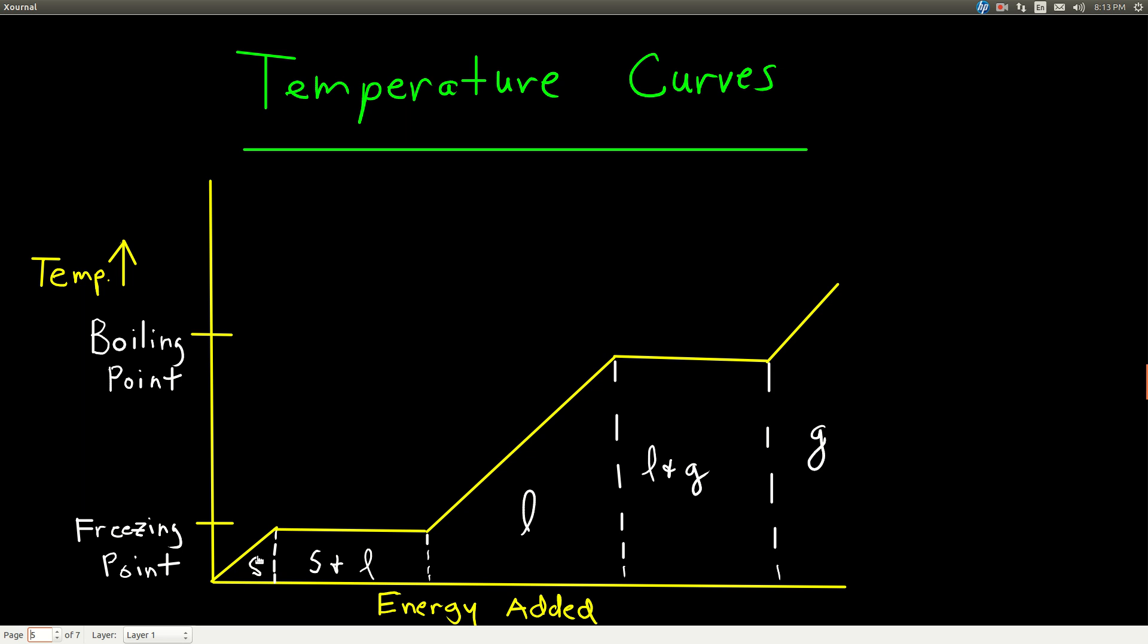And we start out with frozen water, ice, that's at some temperature below its freezing point, which is zero Celsius. And so we're right here on the curve. See there? And as we add energy, the temperature of that ice will increase, but it will remain ice.